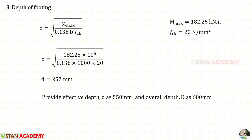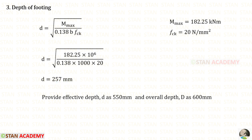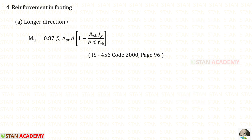Now we have to find the effective depth D. For Fe415 steel, using the standard formula we get 257 mm, which is a very small value. The footing may fail in one-way shear or two-way shear, so let us increase the effective depth. We will keep the effective depth d as 550 mm and the overall depth D as 600 mm.